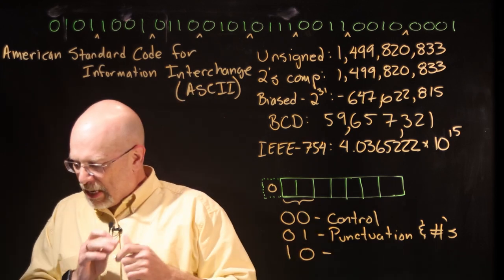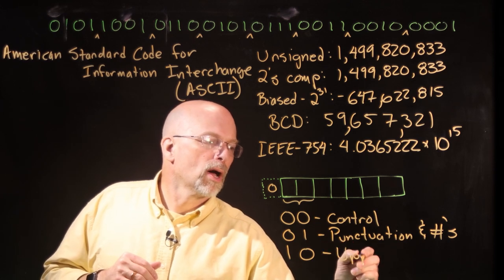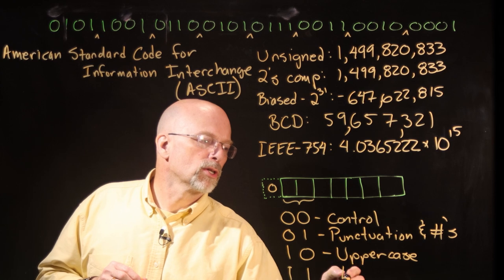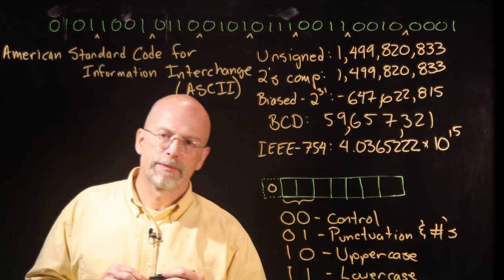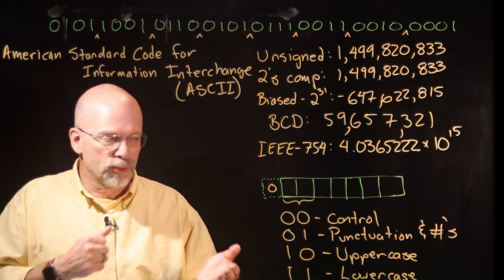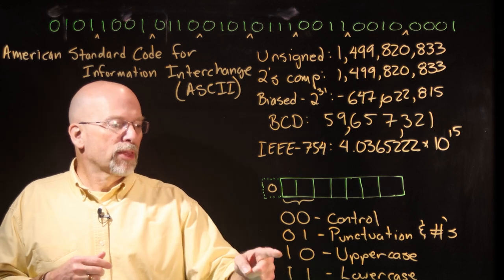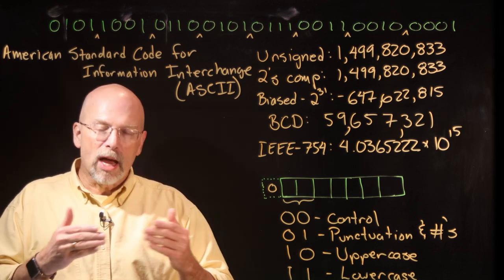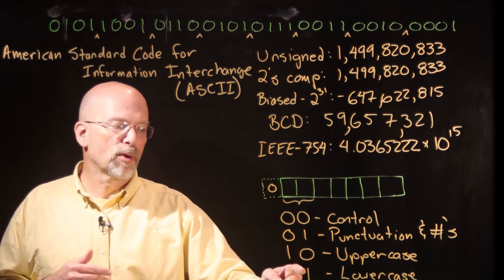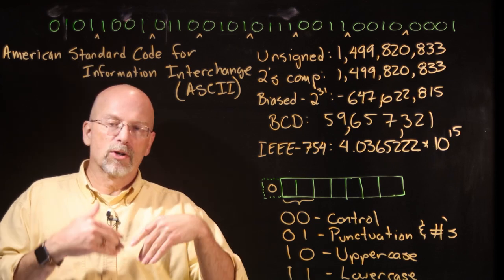If it started with one zero, in addition to some punctuation like parentheses and so forth, this was for the most part uppercase letters. And if it started with one, one, it was lowercase letters and some additional punctuation. Something that was interesting about these things, if you wanted to change something between uppercase and lowercase, all you had to do was either turn this bit to a zero or turn that bit to a one. Just flipping back and forth between zero and one, the letters, the capital A and the lowercase a, lined up with those bits just fine.